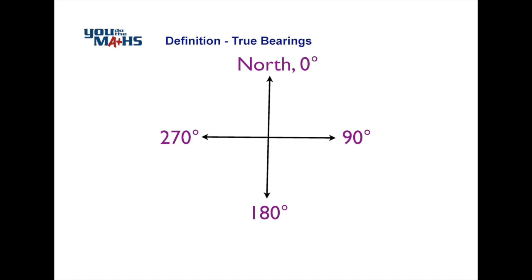True bearings are based on an angle difference from north. So we start always looking towards the north. That's zero degrees and we go around to each compass direction in multiples of 90 to where we finish at 360 degrees back at north again.